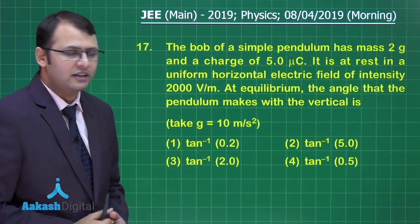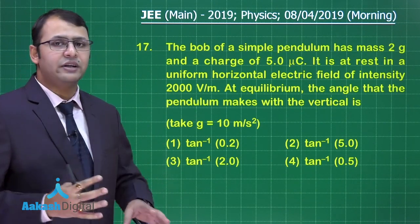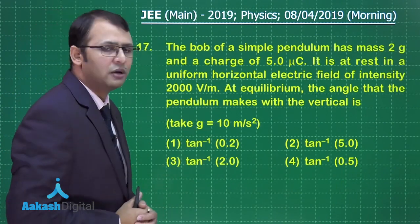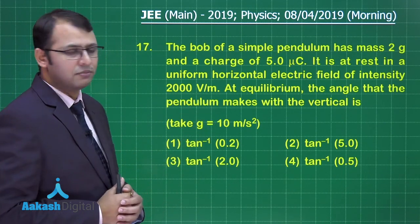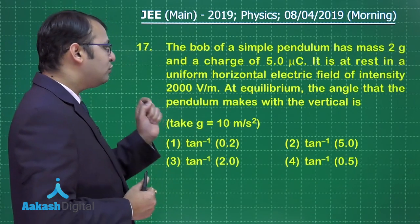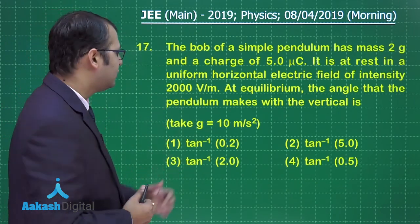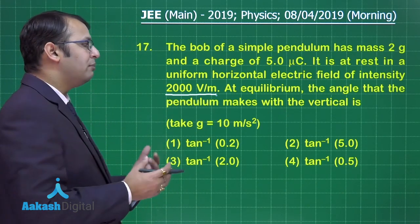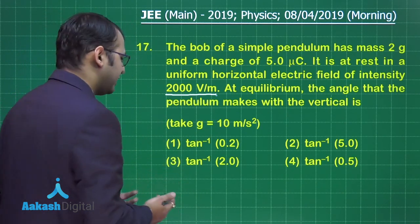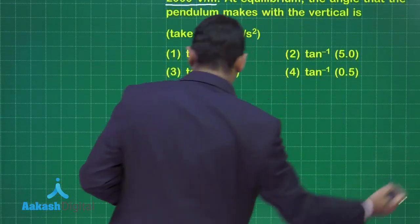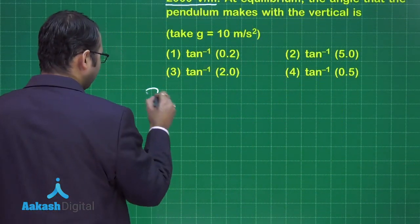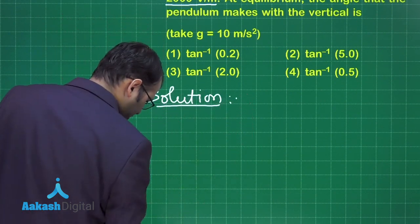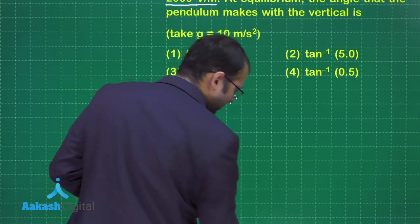Now the question you see here belongs to chapter electrostatics, that is the section of electromagnetism. Here, a simple pendulum has mass of 2 grams and a charge of 5 microcoulomb. It is at rest in uniform horizontal electric field of intensity 2000 volt per meter. At equilibrium, the angle that the pendulum makes with vertical is... So it's a very simple formula based question. We can solve this simply by the help of a diagram.